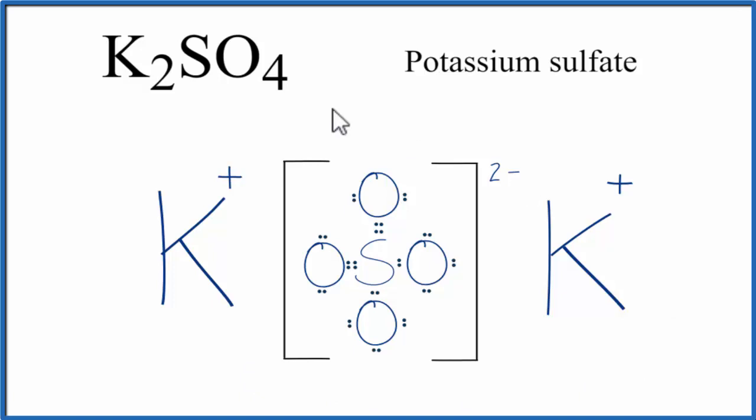The Lewis structure we've drawn here for K2SO4 is what we call a formula unit. With potassium sulfate, an ionic compound, it's a crystal, so it's made up of a regularly repeating pattern of these formula units. What we've drawn is one formula unit of that crystal.